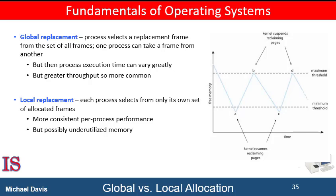How does Linux determine which process to terminate? Each process has what is known as an out-of-memory score, with a higher score increasing the likelihood that the process might be terminated by the out-of-memory killer routine. Out-of-memory scores are calculated according to the percentage of memory a process is using — the higher the percentage, the higher the out-of-memory score.